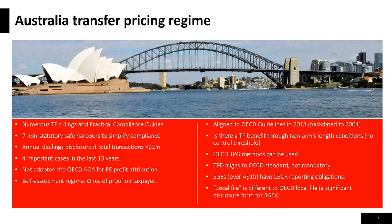Neither Australia nor New Zealand has adopted the authorised OECD approach for dealing with branches. Both treat a branch as if it's a separate entity, but neither country allows notional intra-entity transactions.